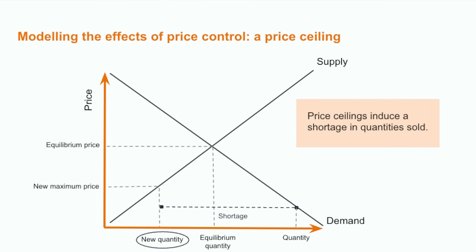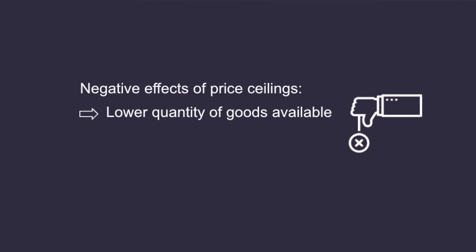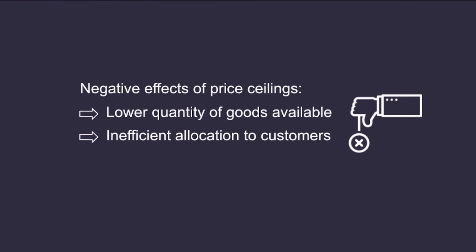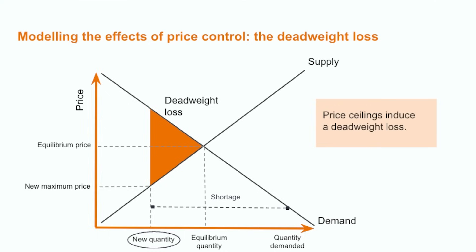A share of the population will want to buy the product but won't be able to get it. This is why, in general, all things equal, price controls will introduce inefficiencies on markets — a waste of resources. In the worst case scenario, it may even induce black markets. As a consequence, price ceilings can have many negative effects: they can lower the quantity of goods available, induce an inefficient allocation to customers and wasted resources, and at the extreme, consumers can shift away from official markets towards black markets. All those negative consequences mean price ceilings have a social cost. This social cost can be modeled as an orange triangle, called the deadweight loss.